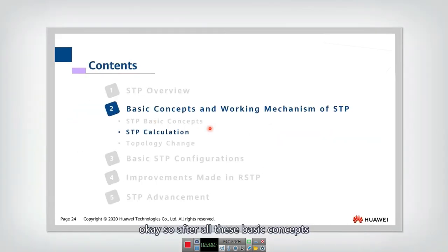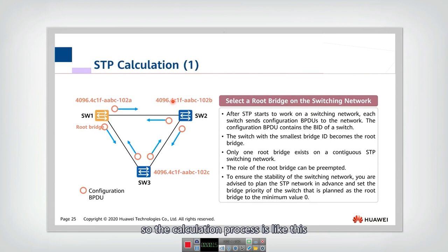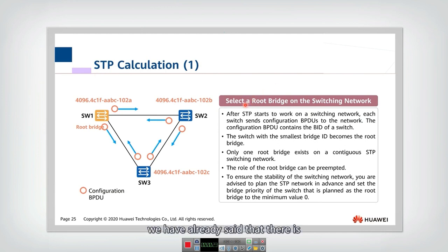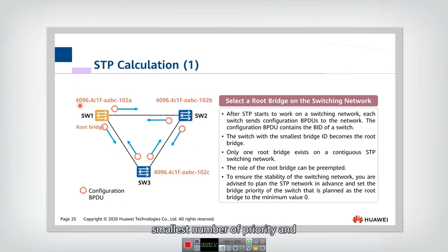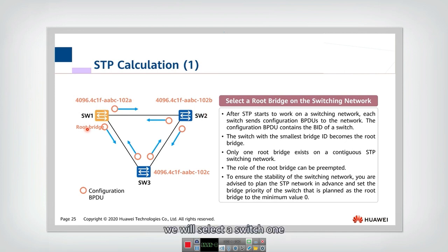After all these basic concepts are introduced, the network switches can calculate the spanning tree. The calculation process is as follows. First, the spanning tree protocol needs to select a root bridge. There is only one root bridge to be selected, and we will select the one with the smallest priority number. If the priority is the same, we select the one with the smallest MAC address. So in this example, we will select switch one as the root bridge.